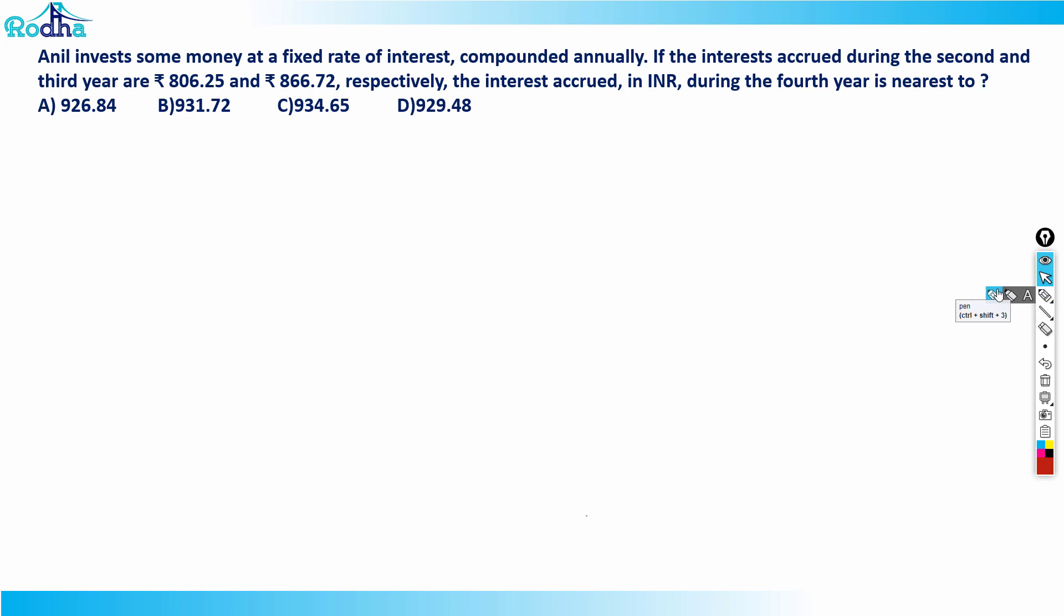Hi guys, let's look at this question from CAT 2021 slot 1 on simple interest and compound interest. This question says that Anil invests some money at a fixed rate of interest compounded annually. If the interest accrued during the second and third year are ₹806.25 and ₹866.72 respectively, the interest accrued during the fourth year is nearest to what value?